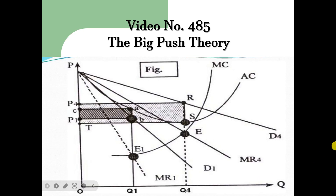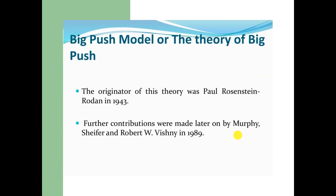Good evening my dear students, followers, colleagues, ladies and gentlemen. In today's video I am going to analyze the Big Push theory which was propounded by Paul Rosenstein-Rodan. The originator of this theory was Paul Rosenstein-Rodan and this theory was developed in 1943. Later on, some other economists including Murphy, Schaeffer and Robert Vishny also contributed to this theory in 1989.